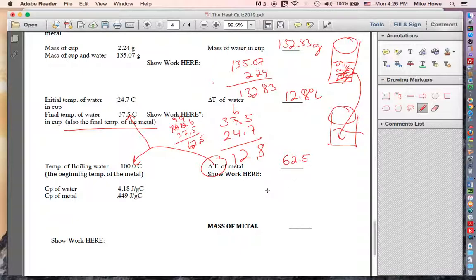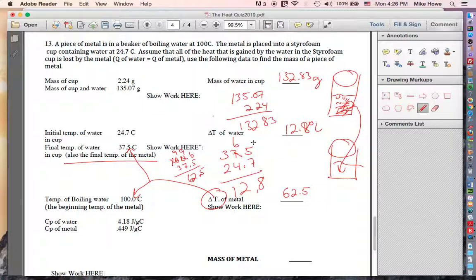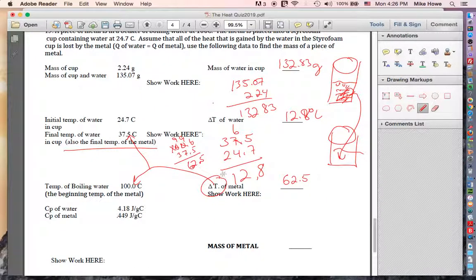So now we need to find the mass of the metal. What did we say about Q equals? Didn't we say the heat change of the metal would equal the heat change of the water? I might have even said that up here. Assume that all the heat gained by the water in the styrofoam cup is lost by the metal. So Q of water equals Q of metal. So let's go ahead and find Q of water. Do we have the information we need to find Q of the water? Yes. So Q equals M, C, P, delta T. Because there is a temperature change, correct?